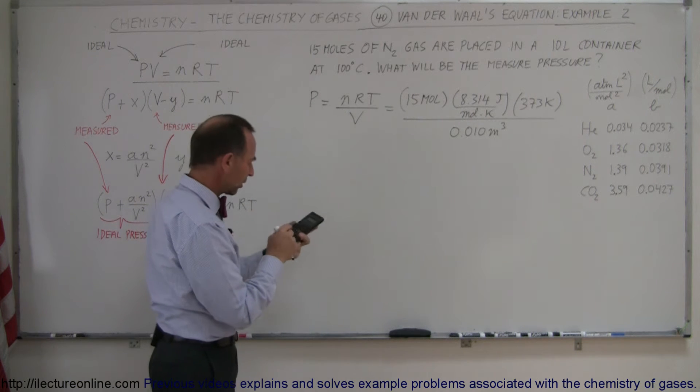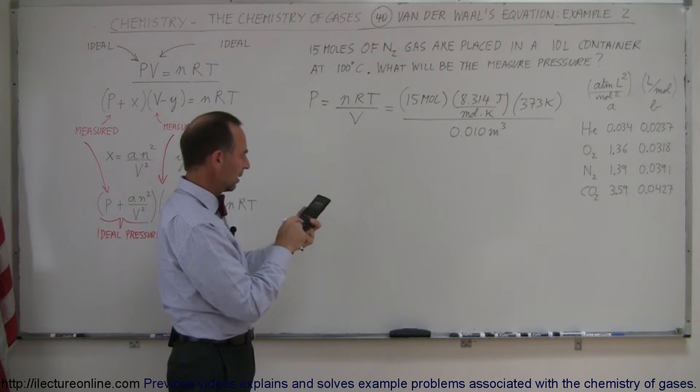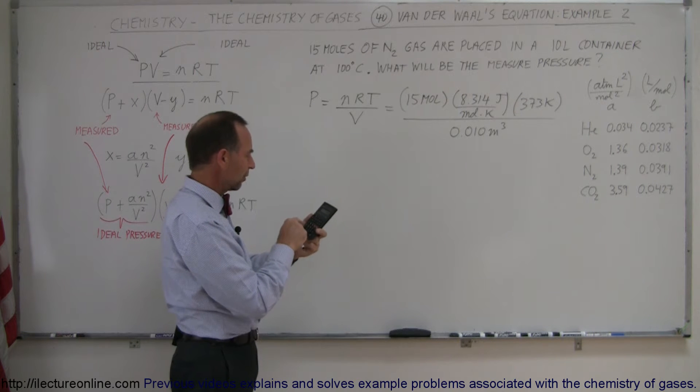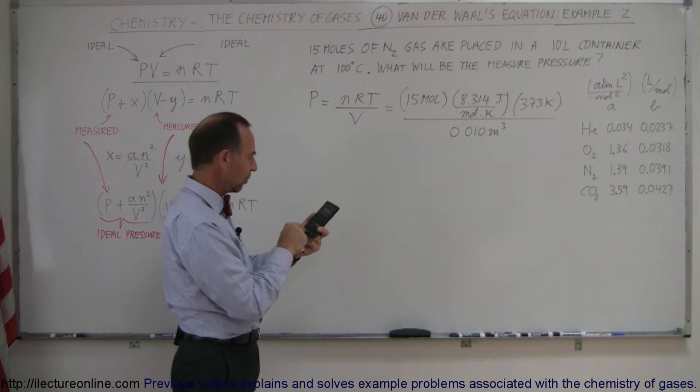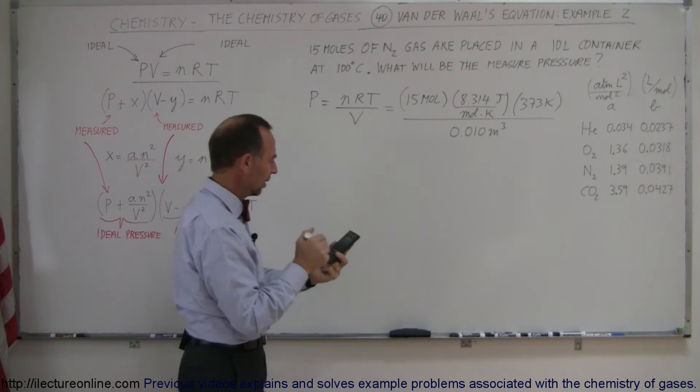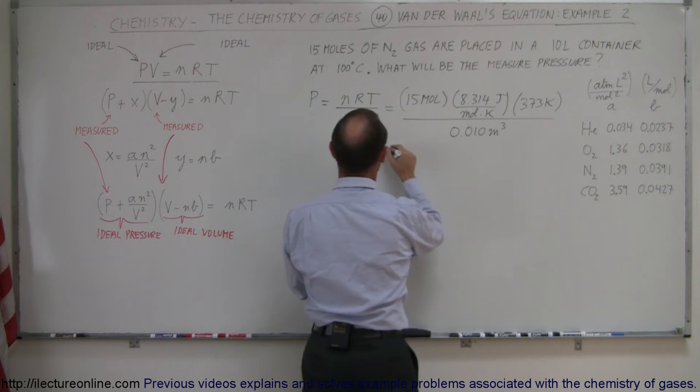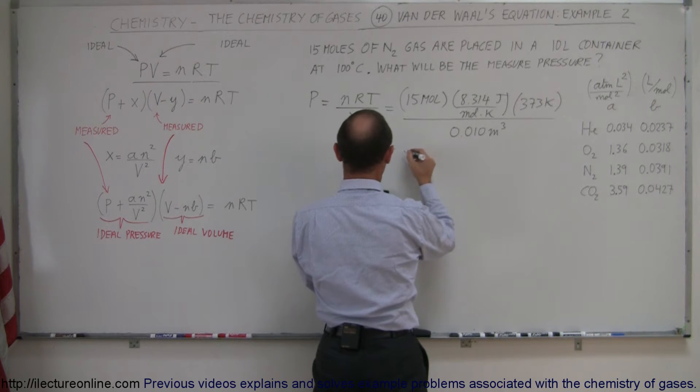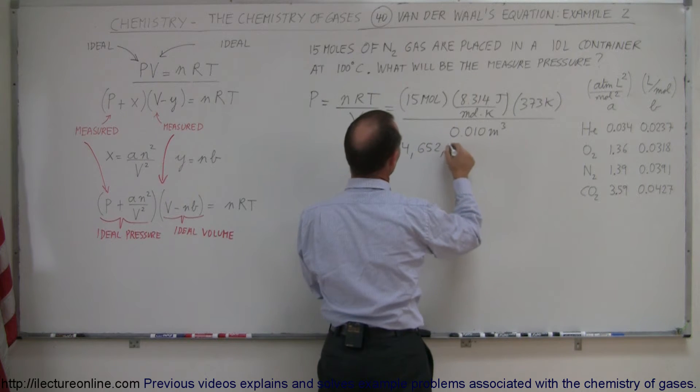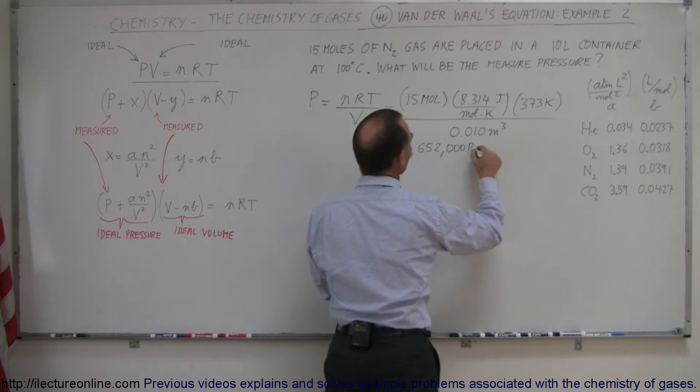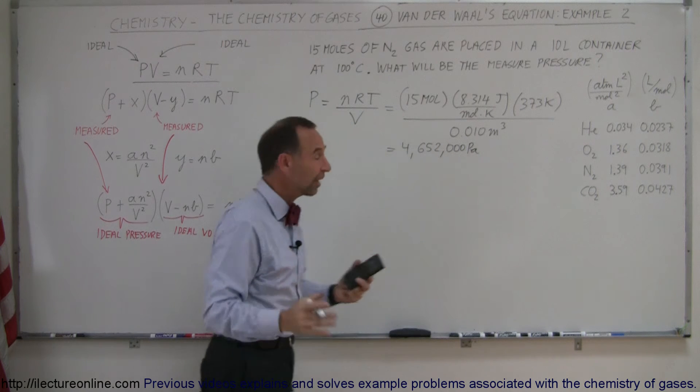So when we work this out, we get 15 times 8.314 times 373, and divide that by 0.01 equals something in the order of 4,650,000, let's say 652,000 Pascals. So that's newtons per square meter, that is standard units.